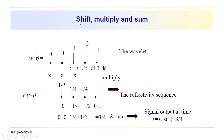We shift the reflectivity series by one sample point and carry out the multiplication: zero times one-half is zero, one times one-fourth is one-fourth, two times one-fourth is one-half. We sum all these together to get three-fourths. So the signal output at time t equals one, S(1), equals three-quarters.